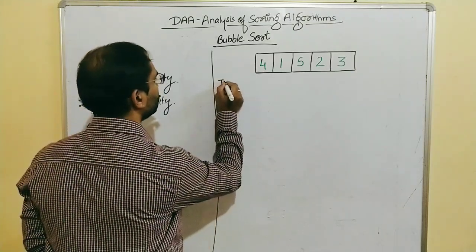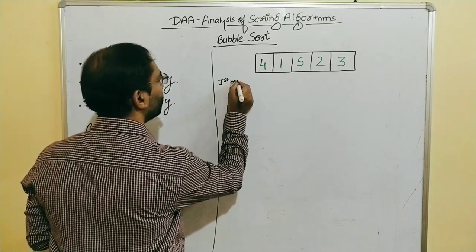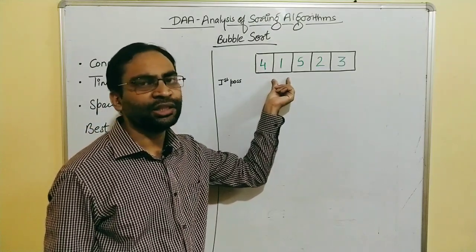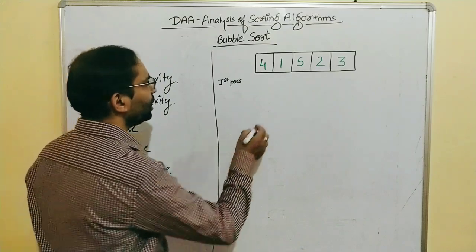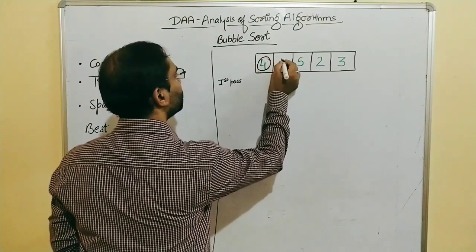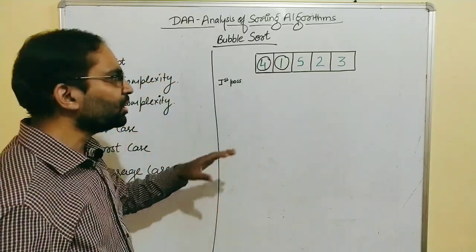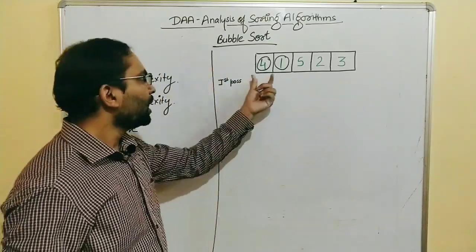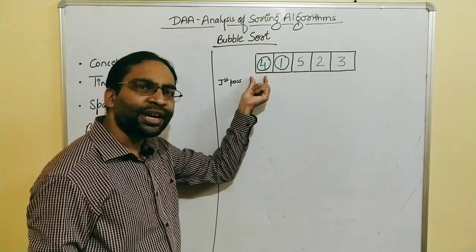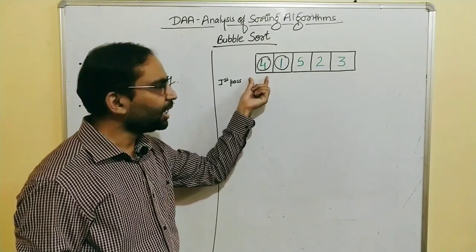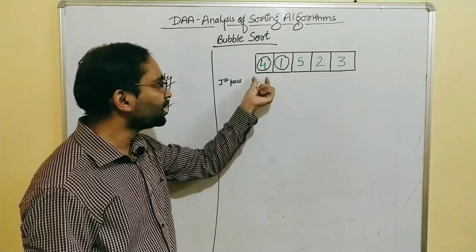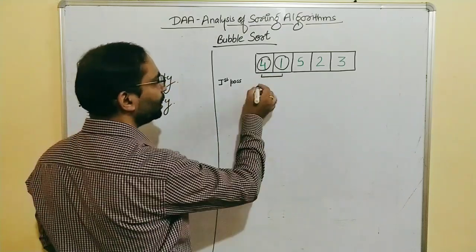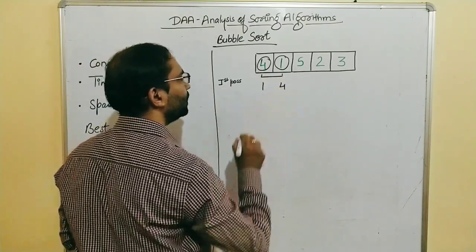In the first pass, we take the first element and its adjacent next element and compare them. For example, we take 4 and 1. If we are arranging in ascending order, and the number on the left hand side is smaller, we do nothing and move to the next pair. If it is larger, we perform a swap. Since 4 is larger than 1, there will be a swap.